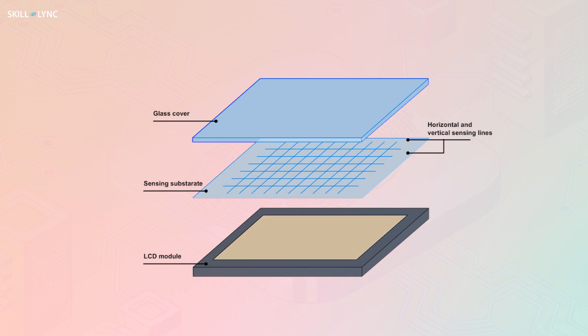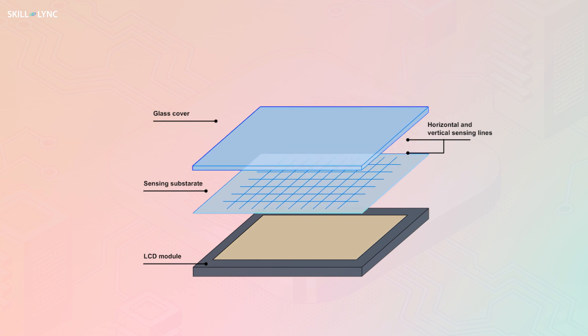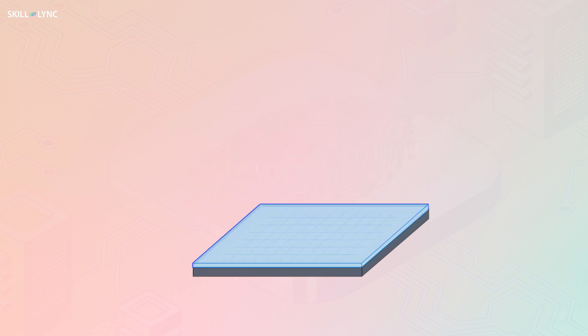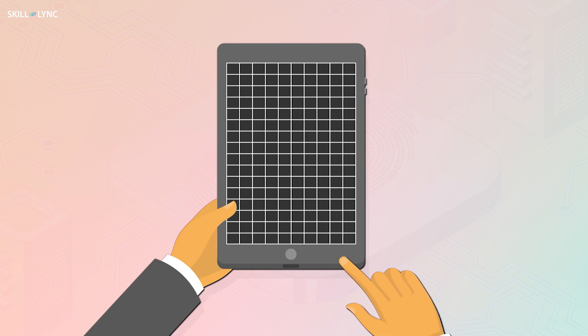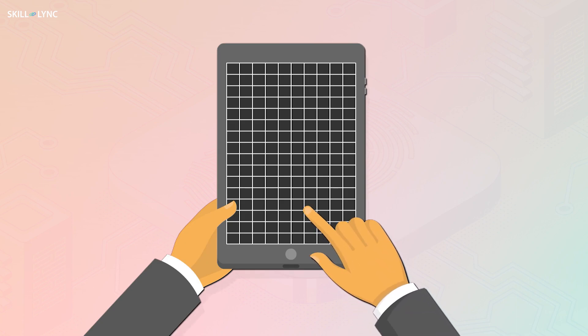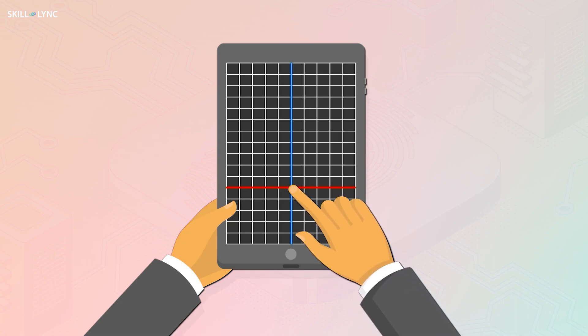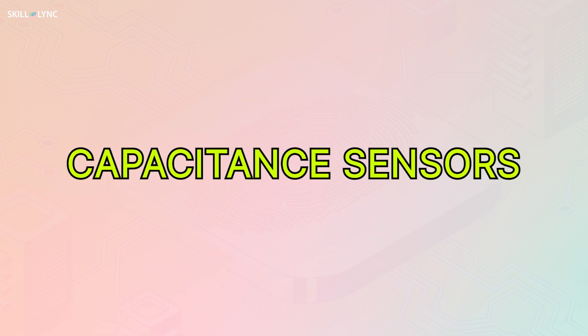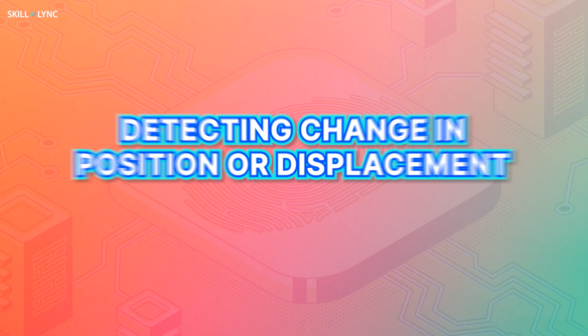The capacitance sensor in our phone consists of a glass cover, below which horizontal and vertical sensing lines are present, charged by the phone battery. When we bring our finger close to the phone screen, the electrostatic field around the grid changes. The sensor detects this change and a corresponding output is produced.